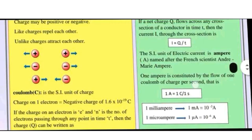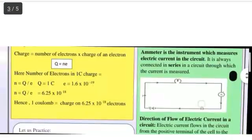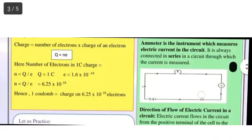Charge Q equals number of electrons into charge of an electron: Q = n × e. Here the number of electrons in one coulomb charge is, friends,